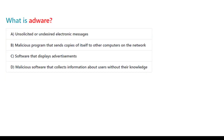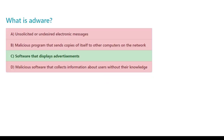What is Adware? A. Unsolicited or undesired electronic messages. B. Malicious program that sends copies of itself to other computers on the network. C. Software that displays advertisements. D. Malicious software that collects information about users without their knowledge. The correct answer is C. Software that displays advertisements.